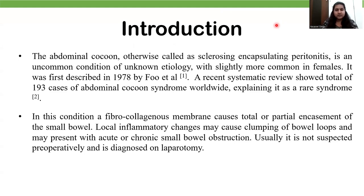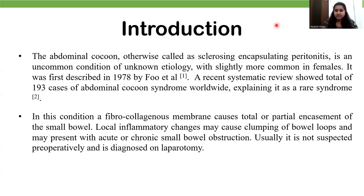Introduction: Abdominal cocoon, otherwise called sclerosing encapsulating peritonitis, is an uncommon condition of unknown etiology. A recent systematic review showed a total of 193 cases of abdominal cocoons reported worldwide, explaining it as a rare condition. In this condition, a fibrocollagenous membrane causes total or partial encasement of the small bowel. Local inflammatory changes may cause clumping of the bowel loops and may present as acute or chronic small bowel obstruction. Usually it is not suspected preoperatively and is diagnosed intraoperatively.